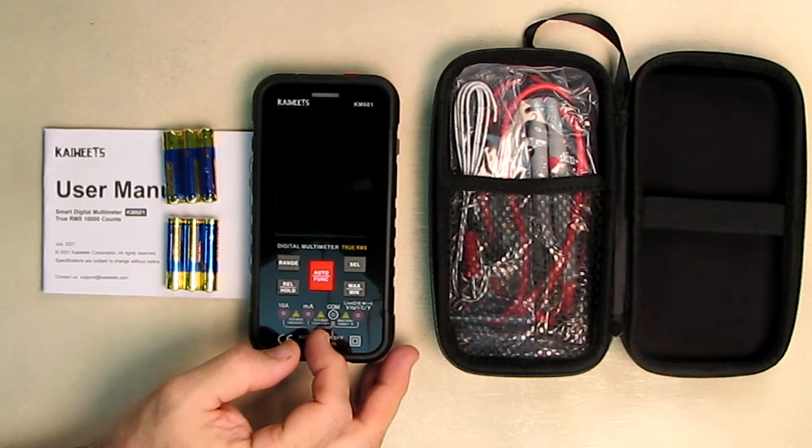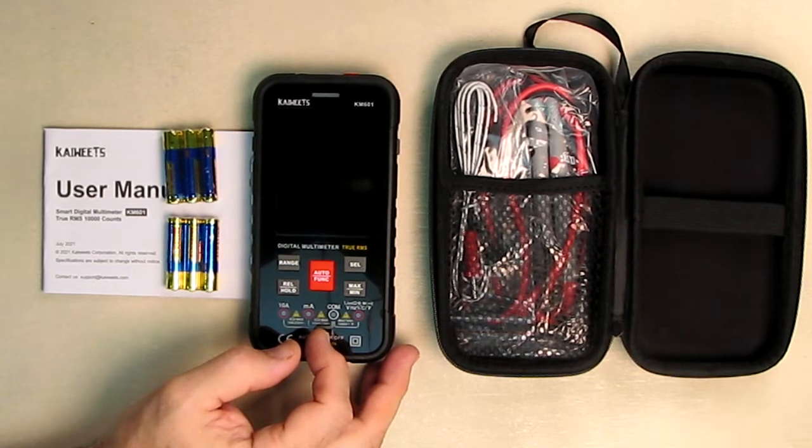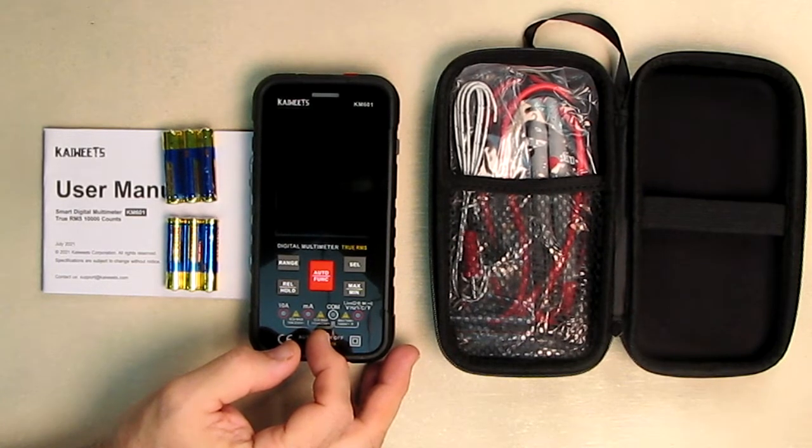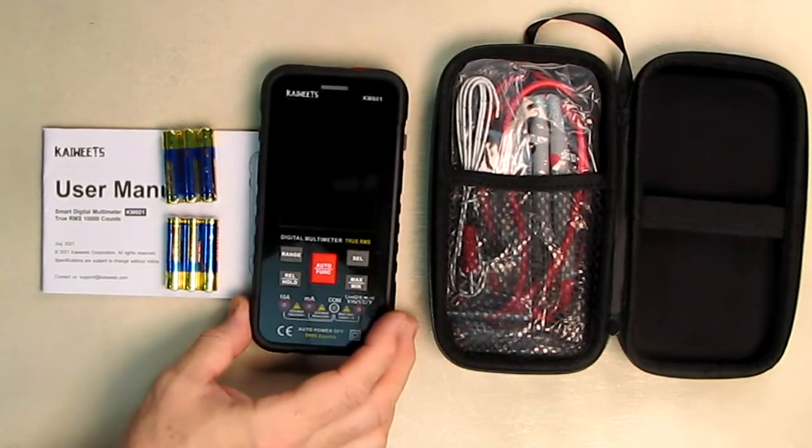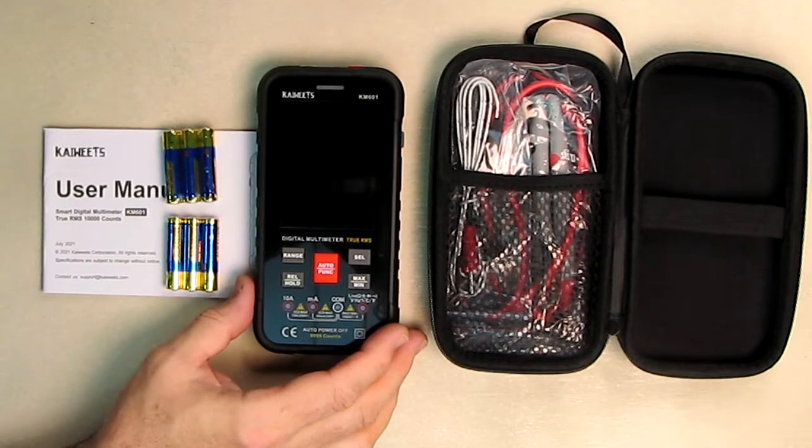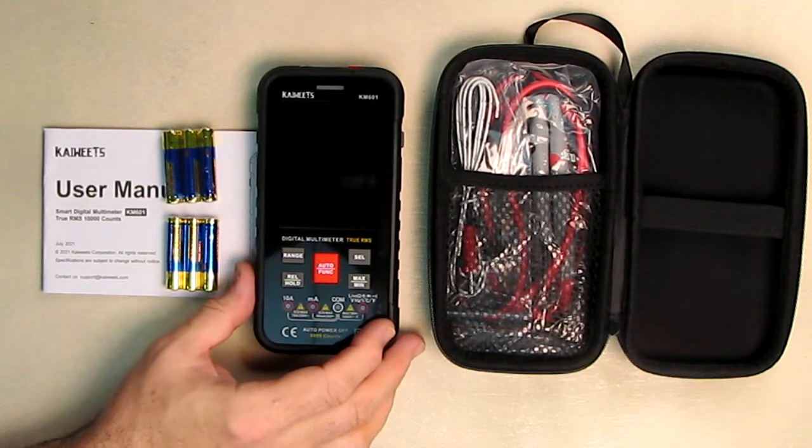This is IEC rated, so it's very safe. Category 3, 1000 volts. Category 4, 600 volts. CE certified and ROHS certified. Anti-burn with double fuses and overload protection. Silicon cover provides additional drop protection, and it comes with that cover on right there. So if you take that cover off, it's even smaller profile.